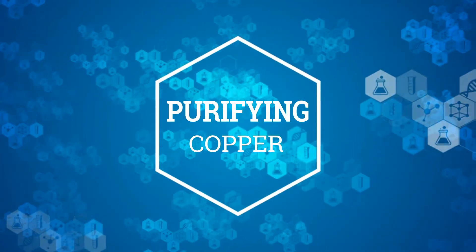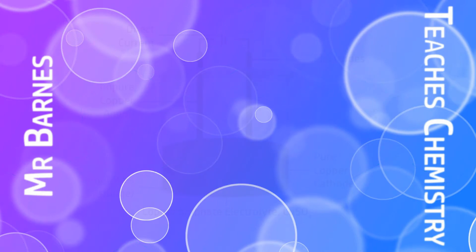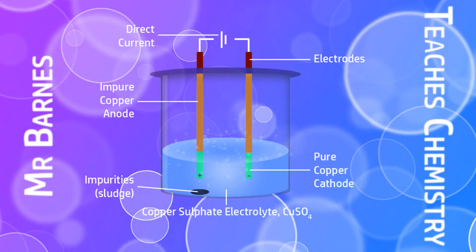Hello there and welcome to this video on how you can use electrolysis to purify copper. When we talk about purifying copper, what we mean is we're removing any impurities, anything in there that isn't copper, so we're left with just pure copper, just copper atoms.